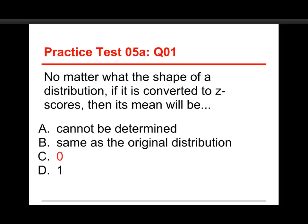Well, the answer on this one is 0. The idea cannot be determined - no, we can do that because z-scores follow a very predictable format. Same as the original distribution, that's true of the shape of the distribution, but the 0 and 1 have to do with the mean and the standard deviation.